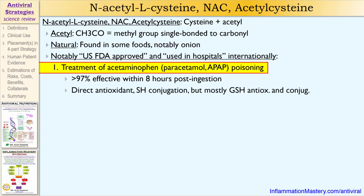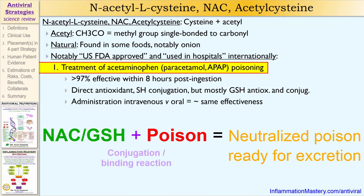Acetylcysteine is a direct antioxidant, but most of its benefit comes when it's incorporated into the tripeptide glutathione. Glutathione is an antioxidant, but it's also a conjugating agent — the body attaches glutathione onto toxic molecules to make them less toxic and more easily excretable. For example, after acetaminophen poisoning, acetylcysteine, which becomes part of glutathione, controls free radical damage and binds onto the acetaminophen molecule to make it less toxic and more easily excreted from the body.